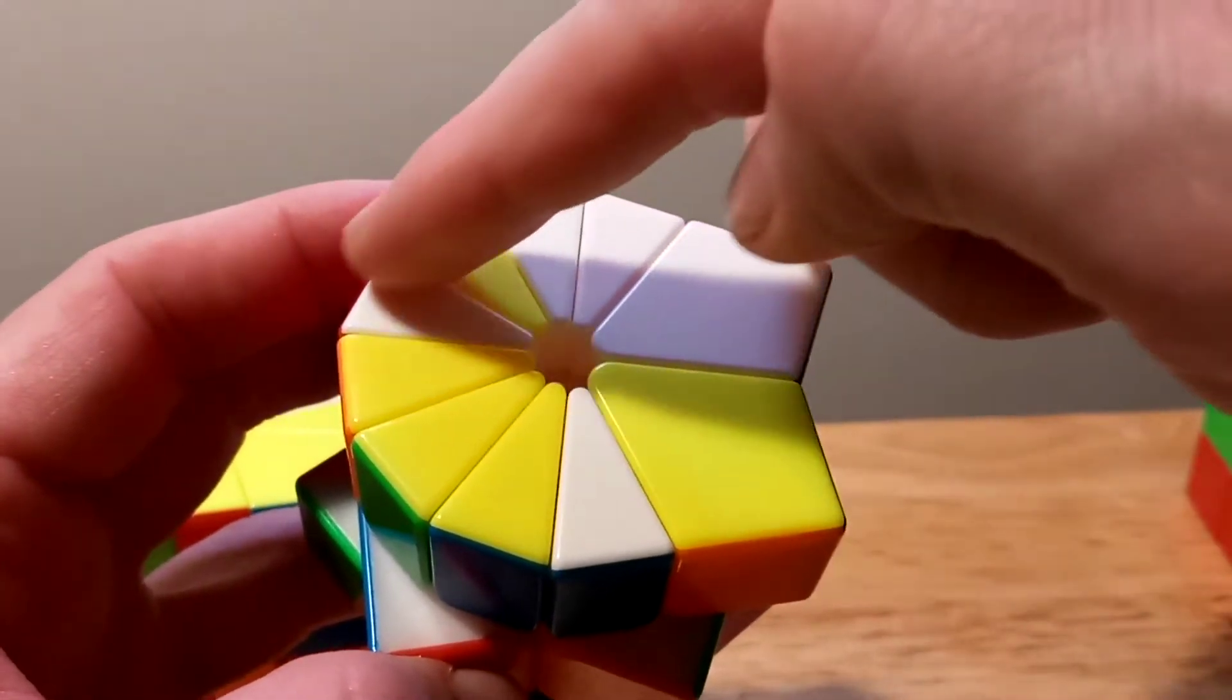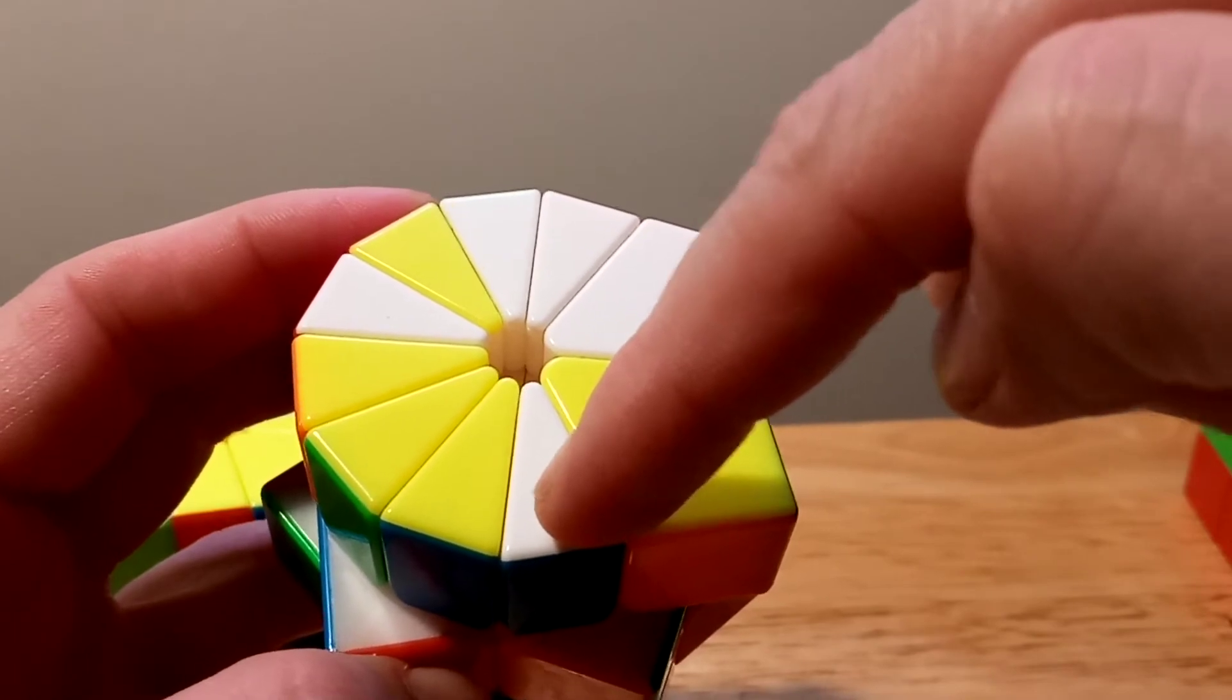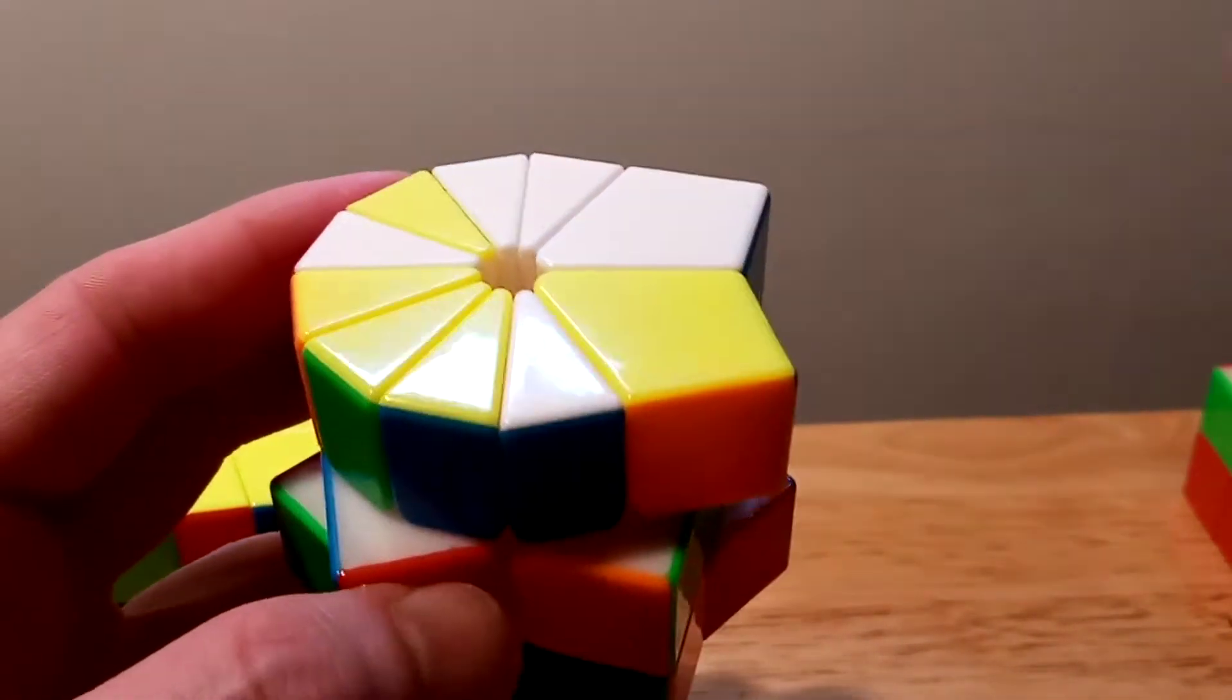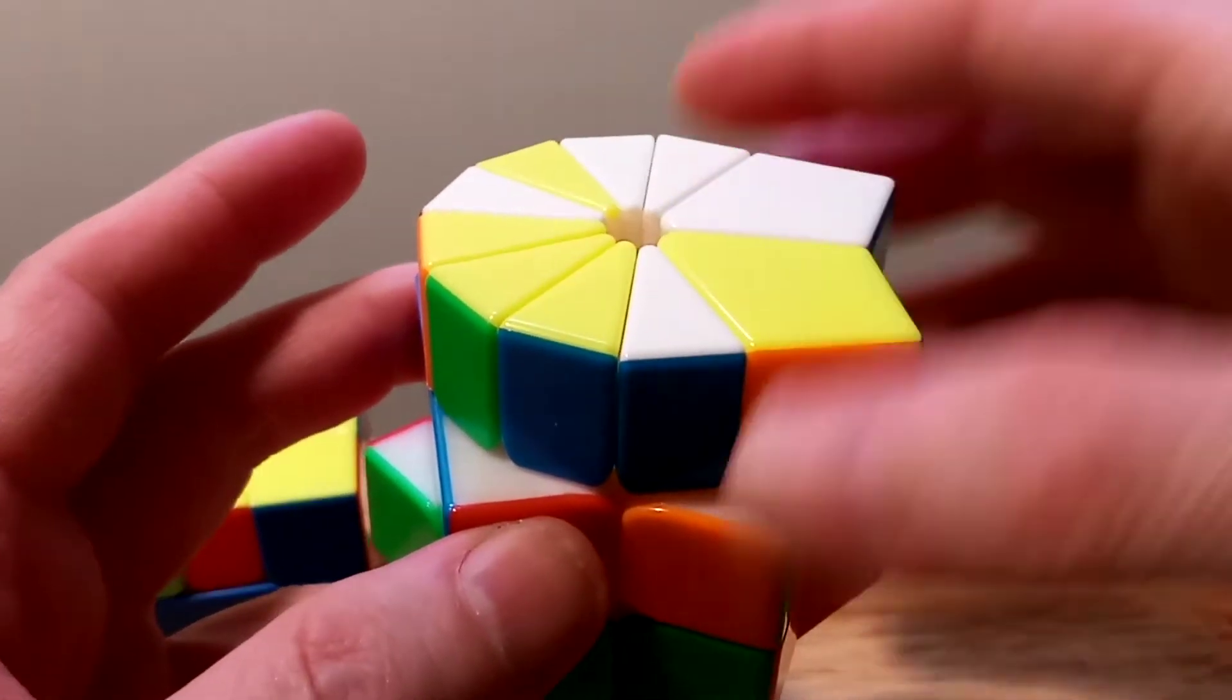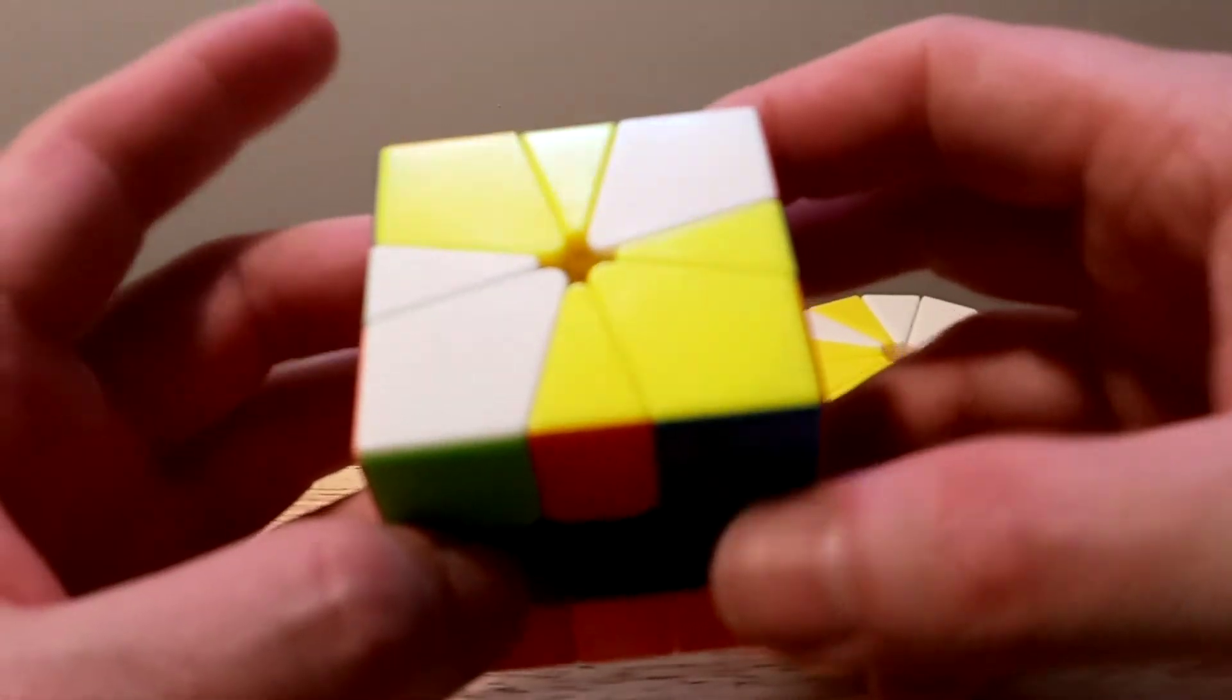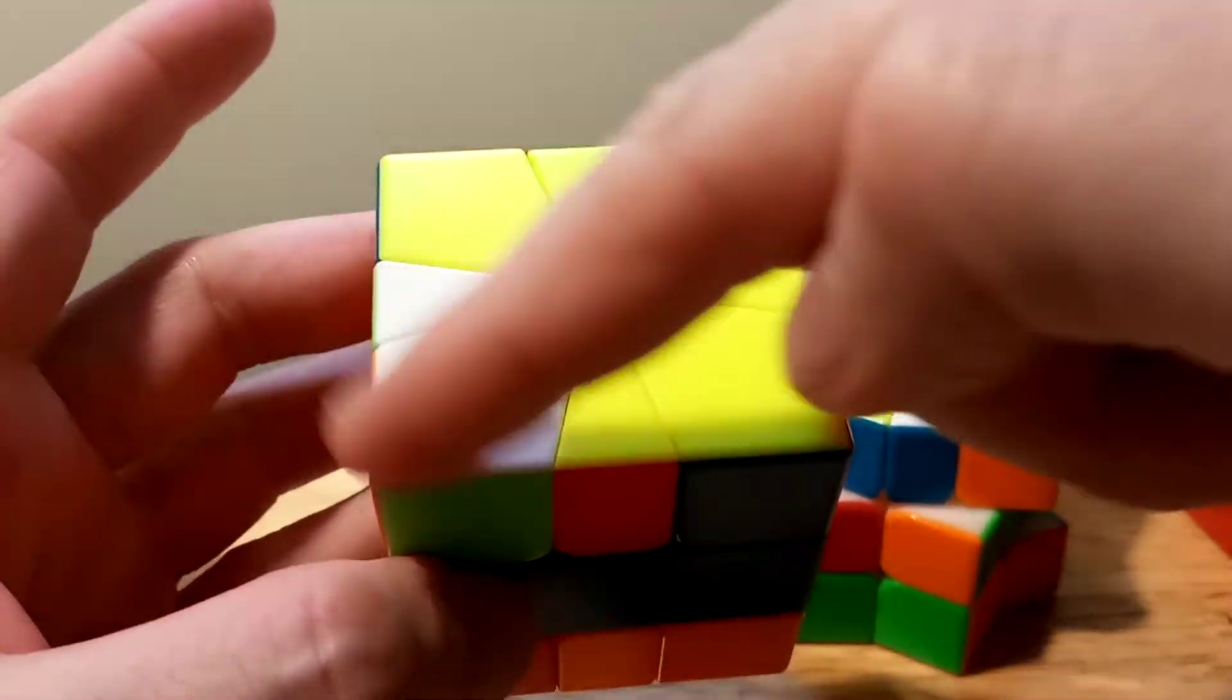You have the eight edges put together and that's the first step in the beginner's method. The next move you do on this will turn it into the square and then you match up your colors so all yellow are on top.